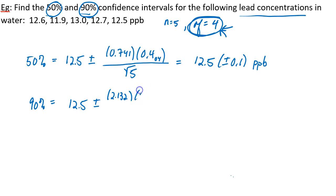And everything else is the same. So when I did the arithmetic, I got 12.5 plus or minus 0.4 parts per billion.